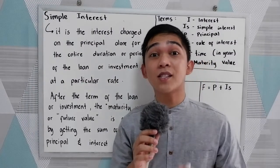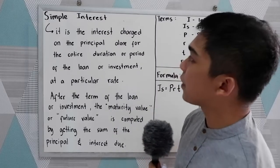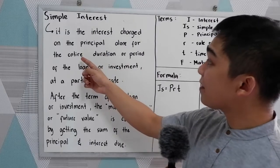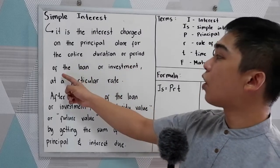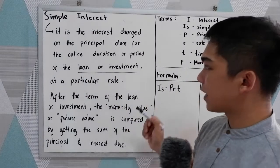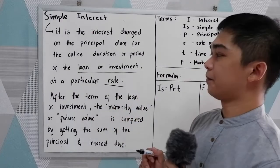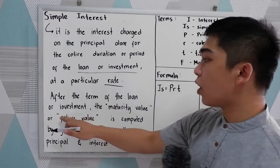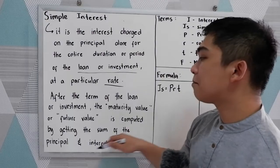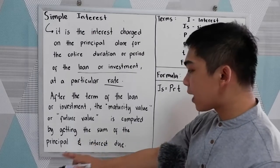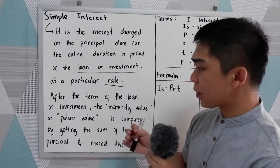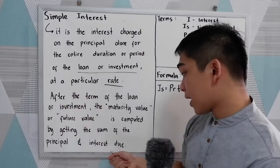First, let us define what is simple interest. A simple interest is the interest charged on the principal alone for the entire duration or period of the loan or investment, at a particular rate. After the term of the loan or investment, the maturity value or future value is computed by getting the sum of the principal and interest due.